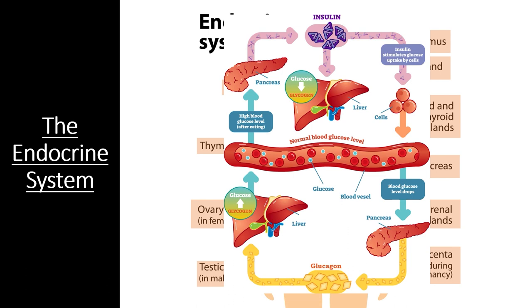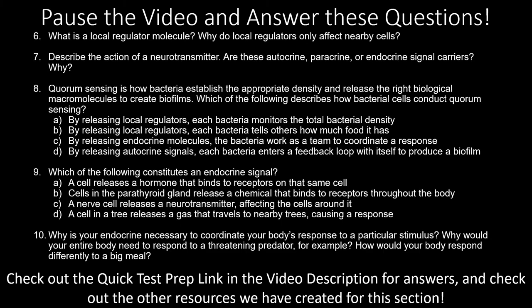Your endocrine system is constantly secreting hormones for many different purposes, causing a huge variety of reactions in different cell types around your body. Now that we have covered local regulators and long-distance methods of cell communication, let's see if you can apply your new knowledge.